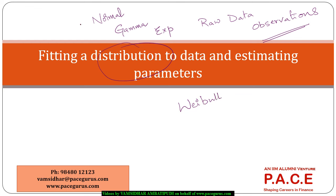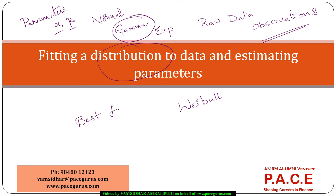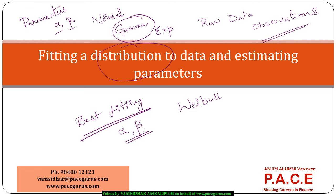Now if at all it is following any one of these — let's say if it is following a gamma distribution — what are the parameters of that particular gamma distribution? We know that the gamma distribution has two parameters alpha and beta. So what are the best fitting values? What is the best fitting value associated with the gamma distribution? If I have to fit a gamma distribution to this particular data, what would be the best possible values for alpha and beta? How do I really estimate the values of the various parameters?